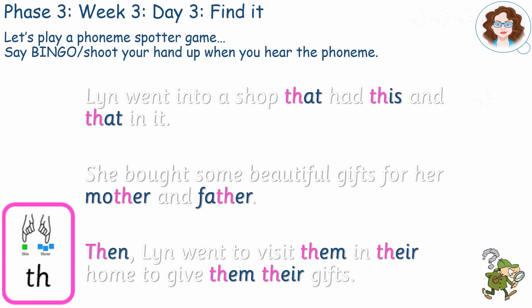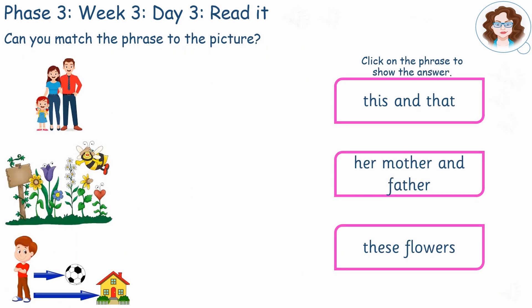Did you find them all? Well done. Read each phrase using your phonemes and pictures to help and then match the pictures to the phrases. Pause here. Did you read: this and that? Her mother and father. These flowers. How did you do?